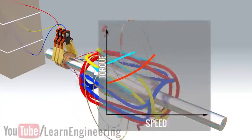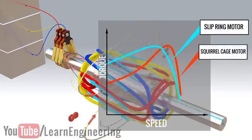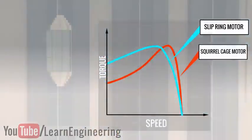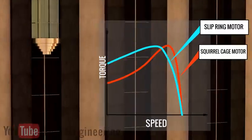These graphs clearly show the higher starting torque produced by slip ring motors in comparison to squirrel cage motors.